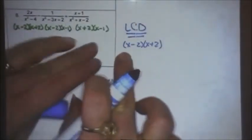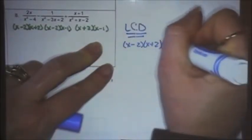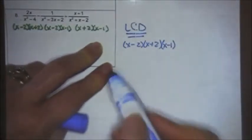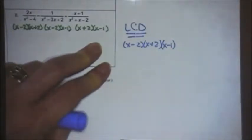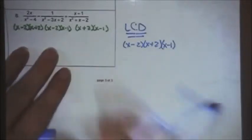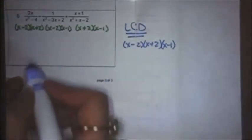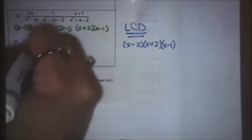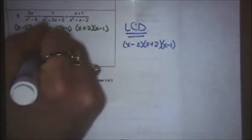I'll come over to the side and find my LCD — it has to contain all of the pieces. The second denominator factors as x minus 2, x minus 1. The third factors as x plus 2, x minus 1. So I know the LCD is going to have x minus 2 and x plus 2 from my first fraction. My second fraction has x minus 2, which I've already written, and x minus 1, so I add that. My first fraction is missing the x minus 1, so I'm going to add x minus 1 on both top and bottom — it will be x minus 2, x plus 2, and the x minus 1 I just put in.